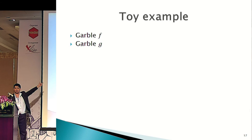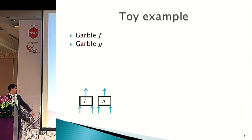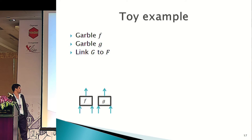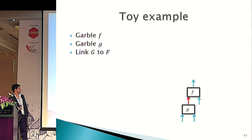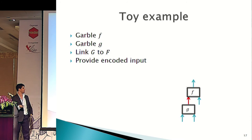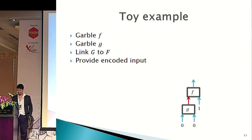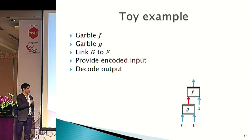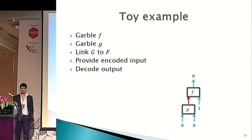For example, to see how it looks: you could garble F and garble G, ending up with two goblings. Then you can link G to F. You can provide an encoded input, decode the output, and you end up with something that looks really nice visually.